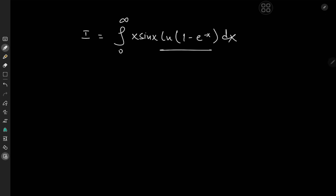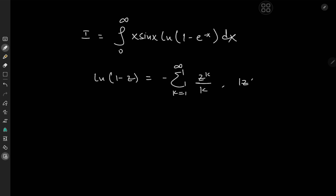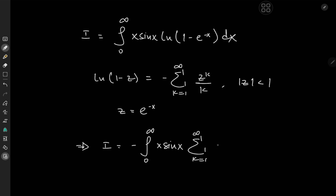Well, we can make use of the logarithm here, because we have log(1 minus something), and recall that log(1 minus z) can be expanded as the negative of the sum over k from 1 to infinity of z^k over k, provided the absolute value of z is less than 1. This is clearly satisfied for z equal to e to the negative x on our interval of integration. So this implies that I equals the negative of the integral from 0 to infinity of x times sine(x) times the sum over k from 1 to infinity of e to the negative kx over k, dx.